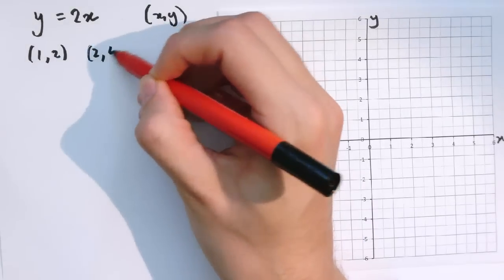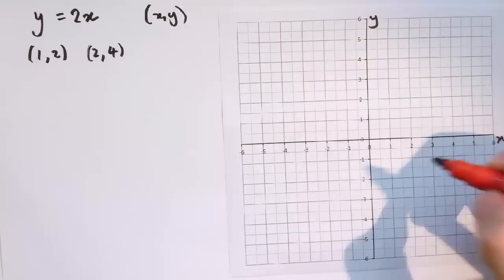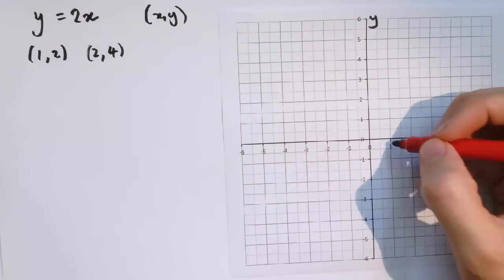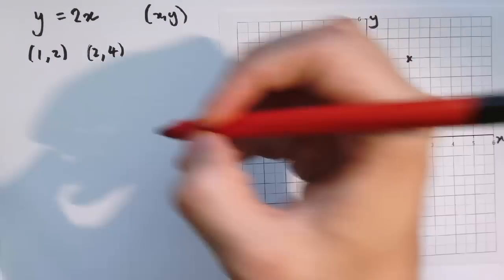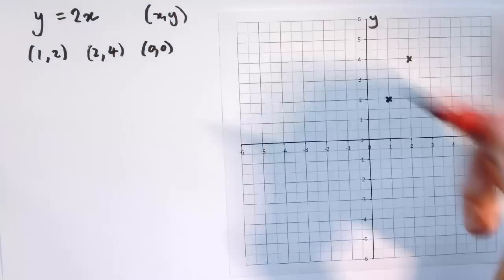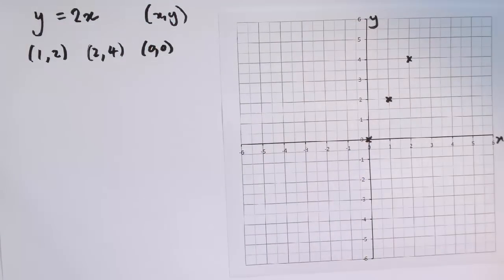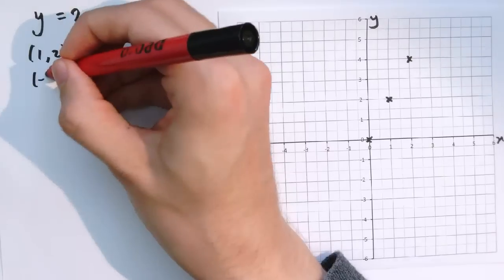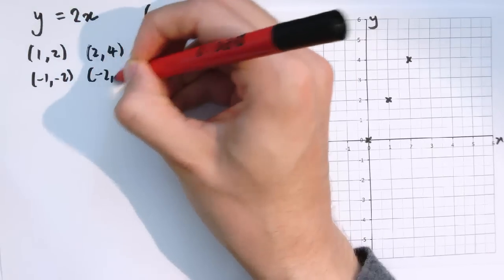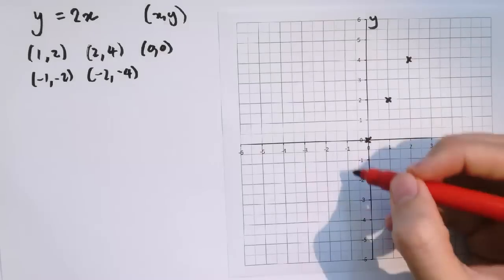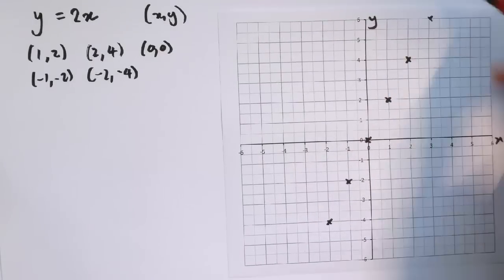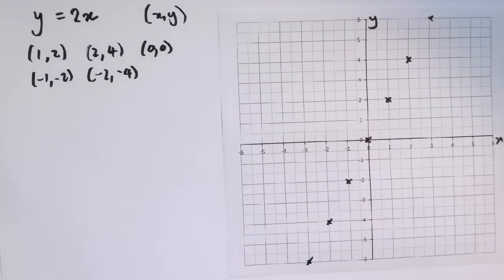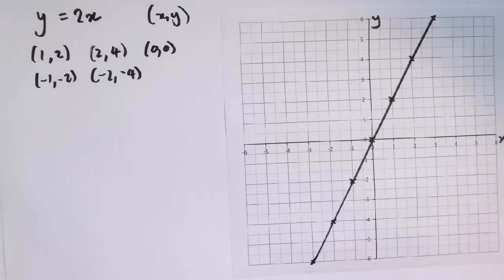If I take x equals 2, that gives y equals 4, so we have the points 1, 2 and 2, 4. We also have 0, 0, so this graph goes through the origin. We could have minus 1, minus 2; minus 2, minus 4; 3, 6; minus 3, minus 6 — and loads of values in between. That leads to the straight line graph here.